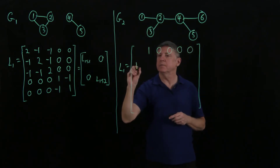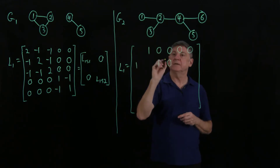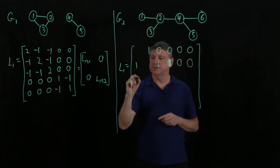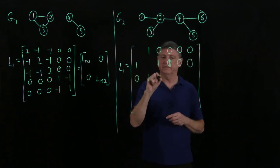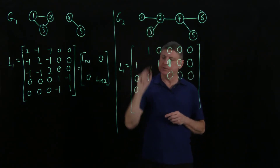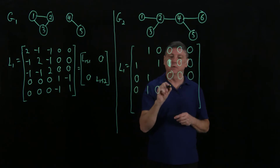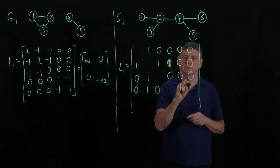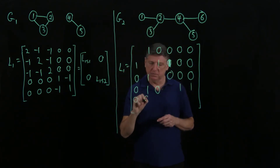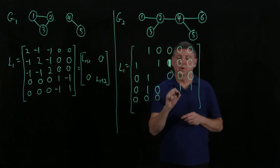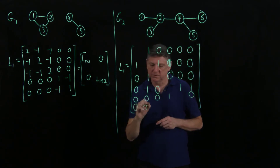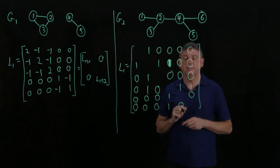Vertex 2 is connected to 1, 3, and 4, and not to 5 or 6. Vertex 3 is connected only to 2. Vertex 4 is connected to 2, 5, and 6. Vertex 5 is connected only to 4. Vertex 6 is connected only to 4. We leave the diagonal entries blank throughout.